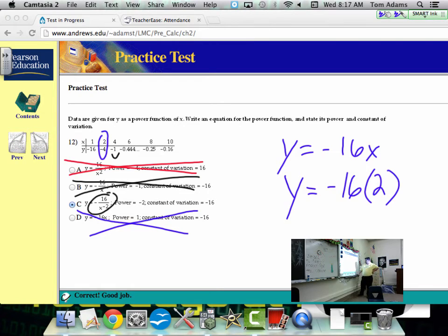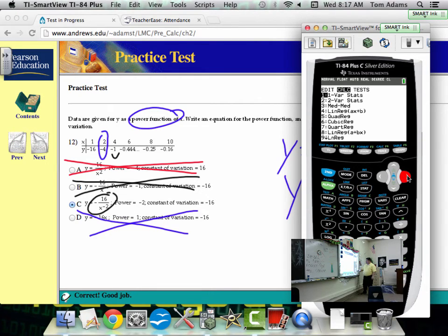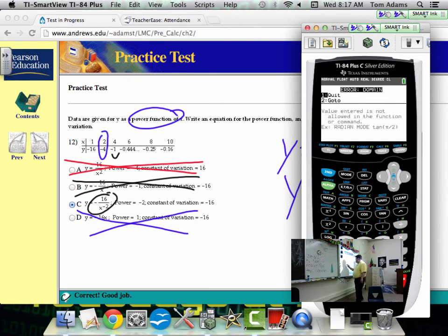Now, the problem with this is that if we plug this in the calculator, if I go through and I plug it in L1, L2, and then I go, oh, it's a power regression, right? So, it's a power function, and I go to stats, and I go to calculate, and I go to power regression, and I hit that, and I try to calculate that, it doesn't like it. And the reason that it doesn't like it is because technically we have x raised to the power of negative 2. And so the calculator doesn't like that negative 2 exponent. Does that make sense?